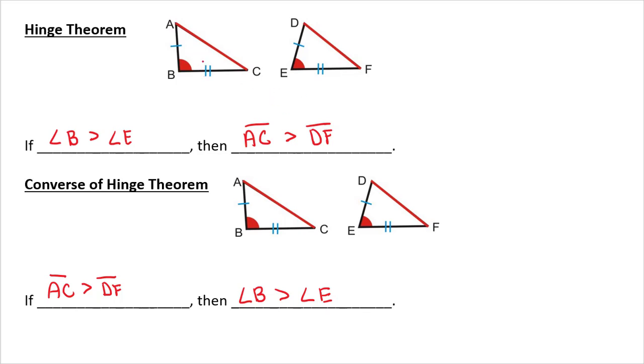If angle B is greater, if this angle is greater, it's going to make a larger side over here than this angle which is smaller.